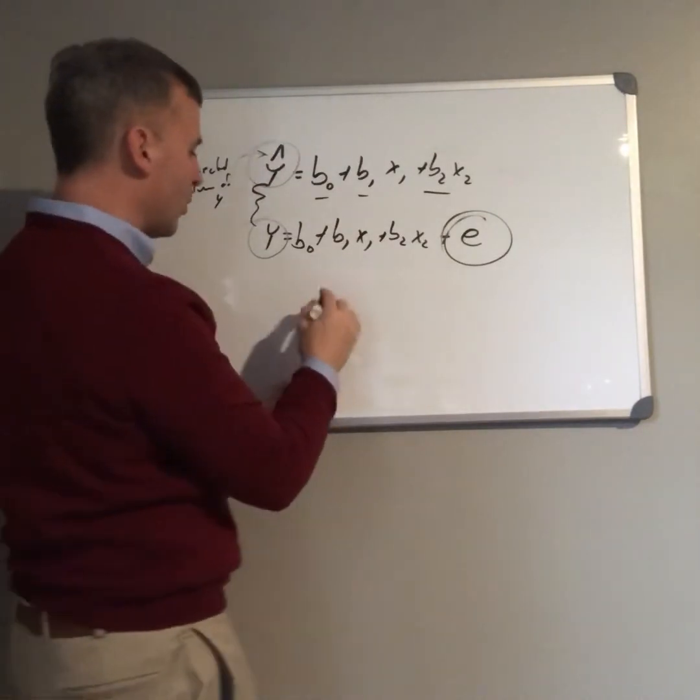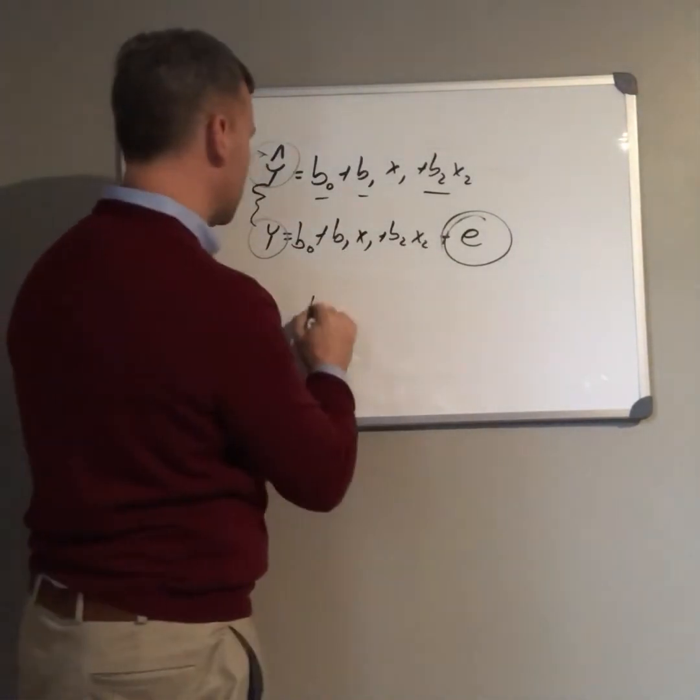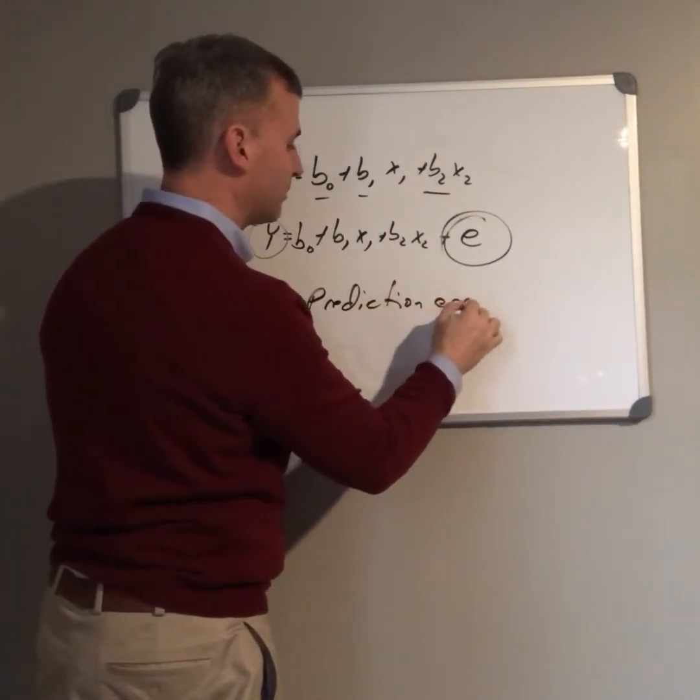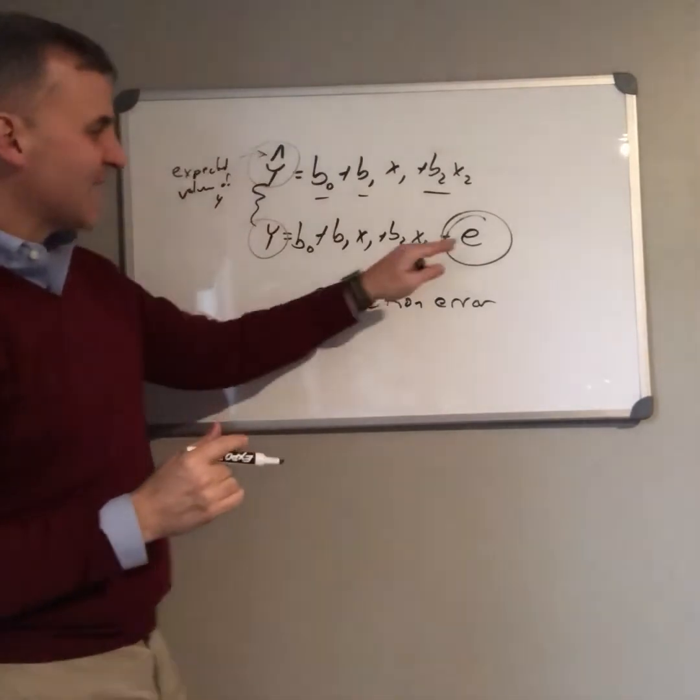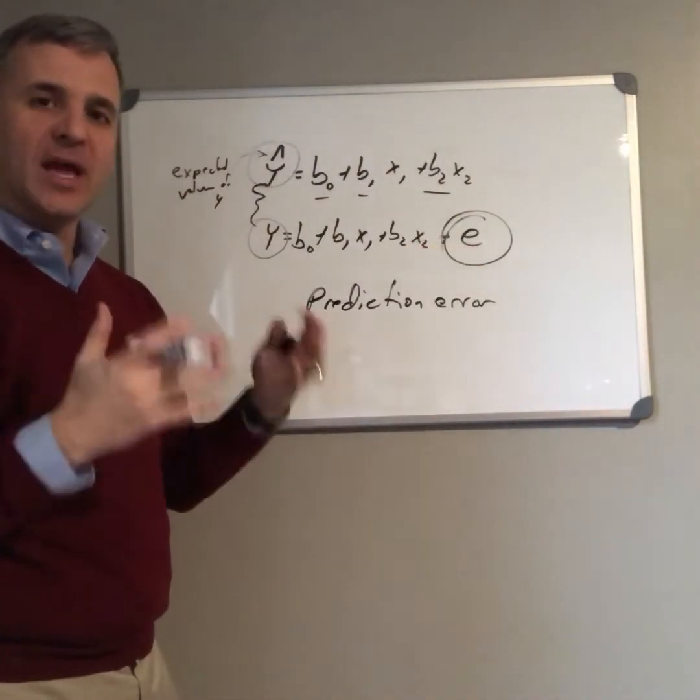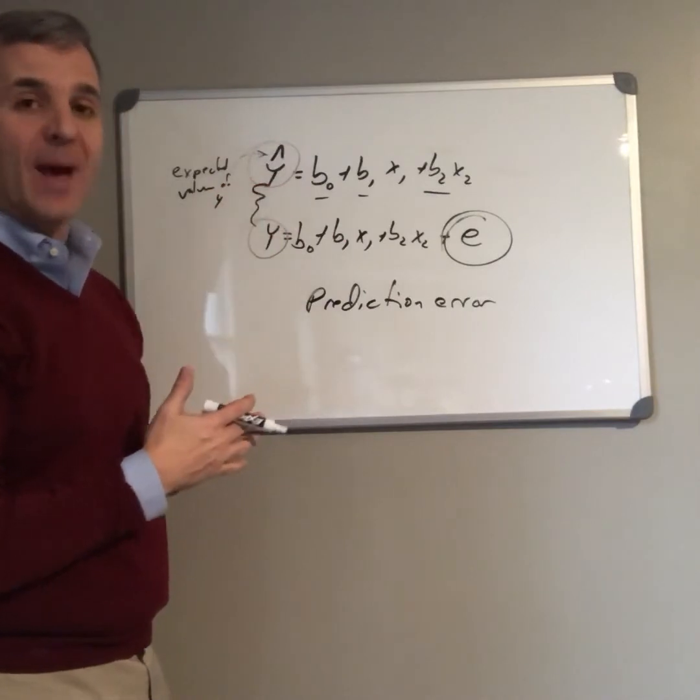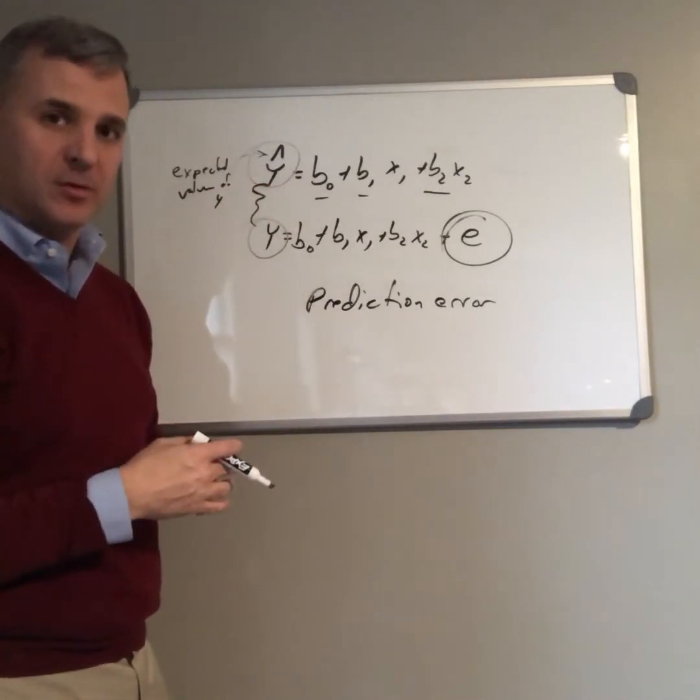Technically, when we're talking about the overall population, we're talking about what's called prediction error. This is how far our predictions for y will be from actual population parameters for y.